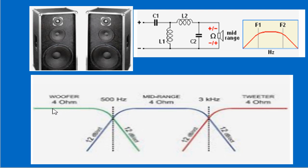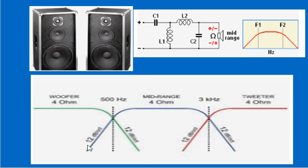Il woofer riproduce ad esempio da 100-200 Hz fino a 500 Hz. Qui subentra il mid-range che arriva fino a 3 kHz. Il tweeter va fino a 20.000 Hz e li supera pure. Ogni altoparlante deve avere un filtro. Come vedete nel grafico, quando la curva scende vuol dire che quella frequenza superiore, la frequenza di incrocio, viene attenuata e passa al driver successivo. Qui c'è il massimo guadagno, mentre dove scende c'è un'attenuazione.